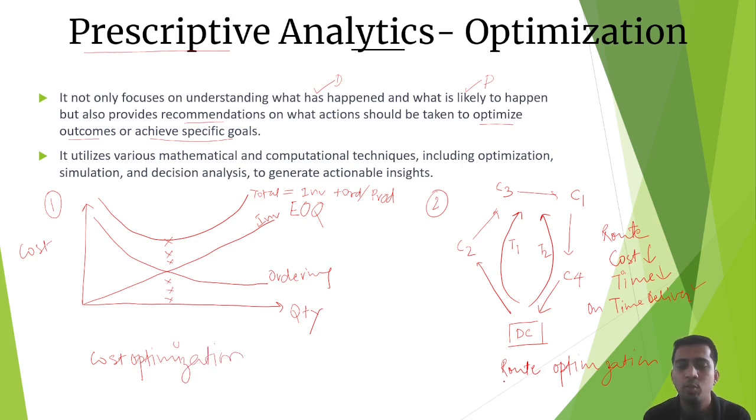Most e-commerce companies or supply chain companies based on delivery to customers use prescriptive analytics tools and techniques to come up with solutions. There are two types of optimization: constrained and unconstrained optimization. We'll discuss that in the upcoming lesson.